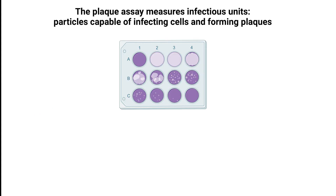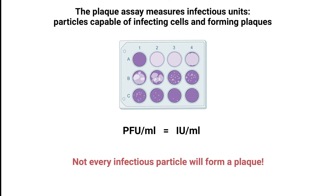The plaque assay measures infectious units — particles capable of infecting cells and forming plaques. While plaque-forming units per milliliter is often equated to infectious units per milliliter, it's important to note that not every infectious particle will form a plaque due to various factors influencing infectivity.